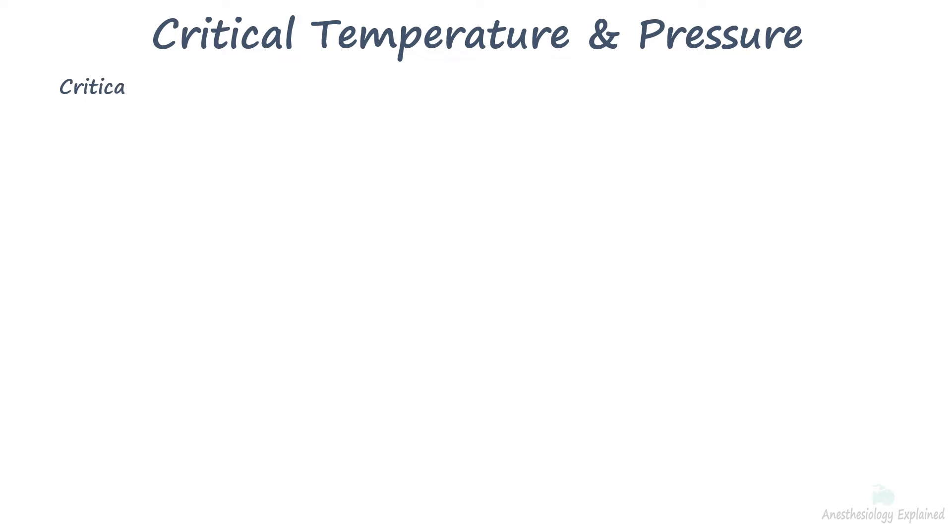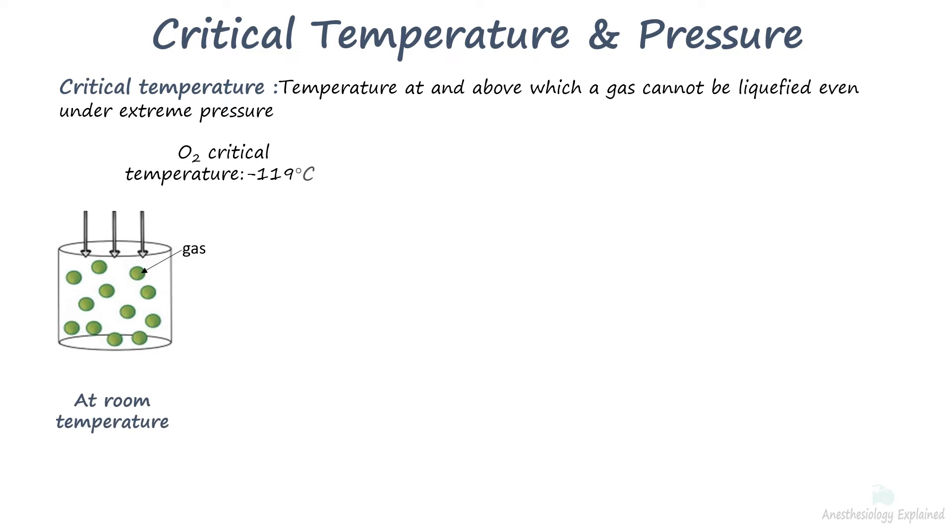The critical temperature of a gas is the temperature at and above which it cannot be liquefied, no matter how much pressure is applied. The critical temperature of oxygen is minus 119 degrees Celsius, so it's gaseous at room temperature. Cooling the gas below this critical temperature can liquefy oxygen.